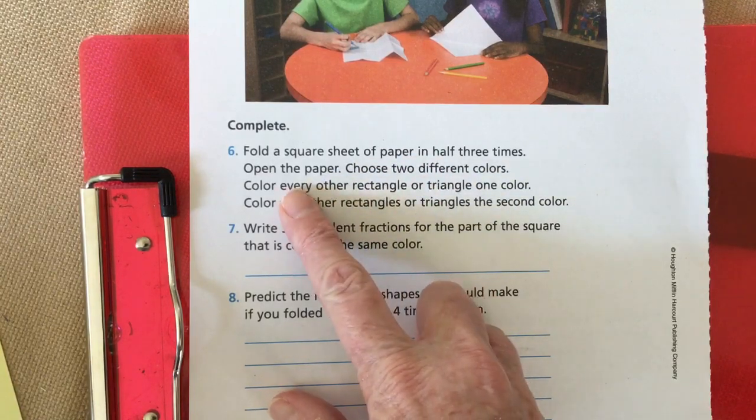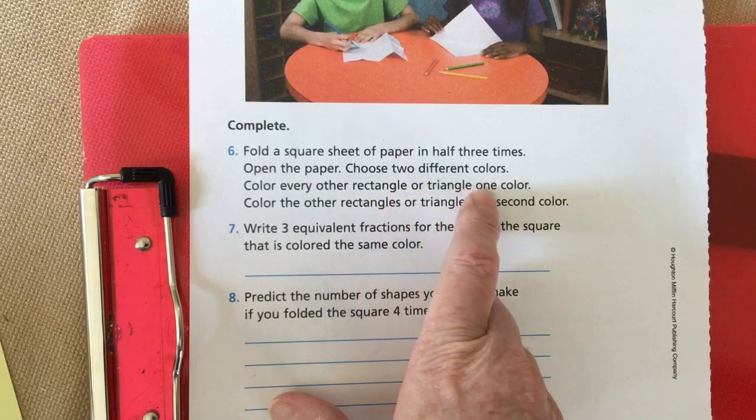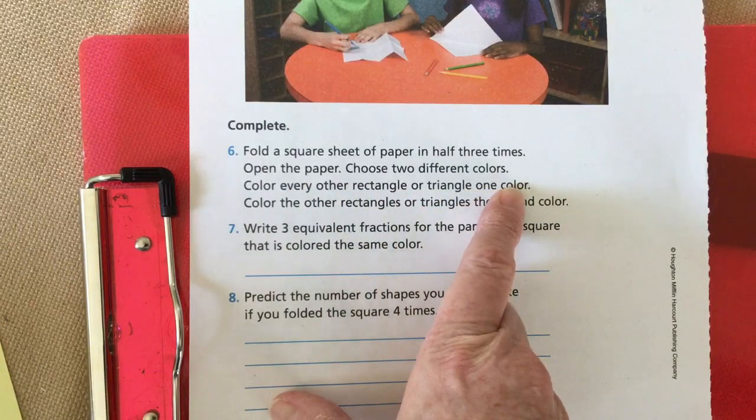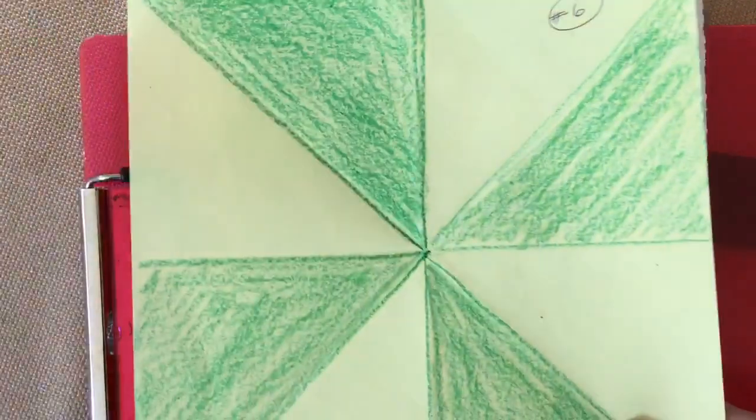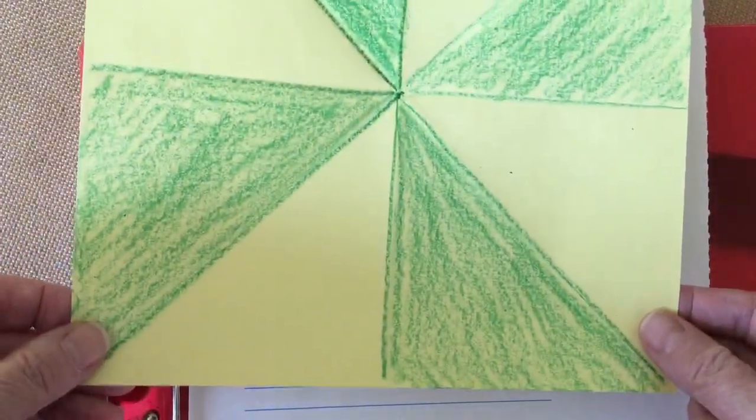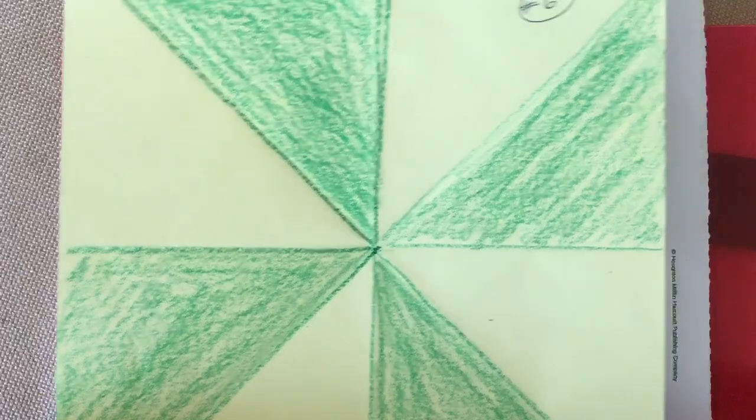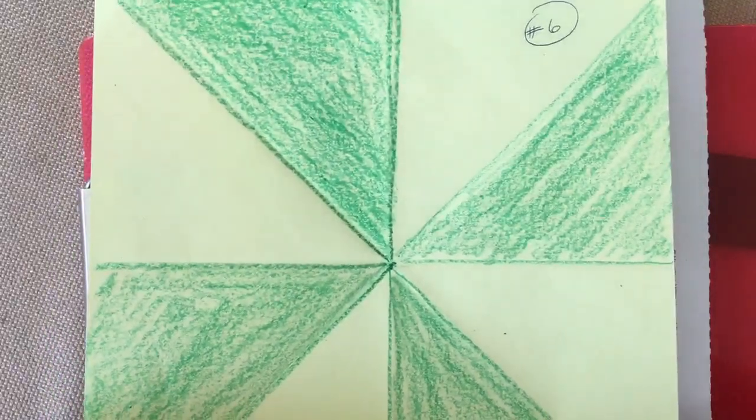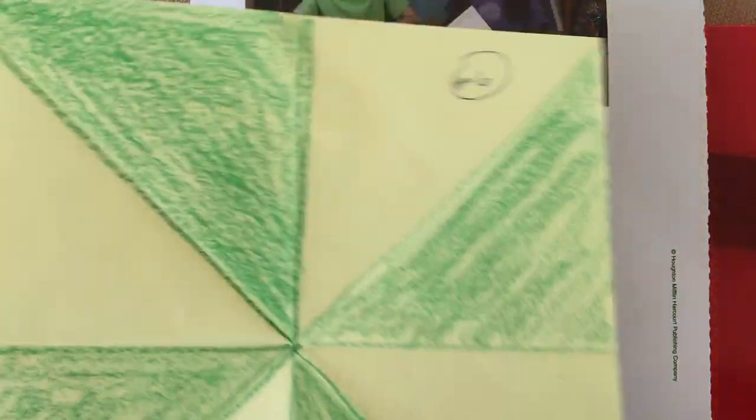Choose two different colors. Color every other rectangle or triangle one color. Here's kind of what mine looks like. Here's the top. I'd have to hold the iPad up too high for you to be able to see.